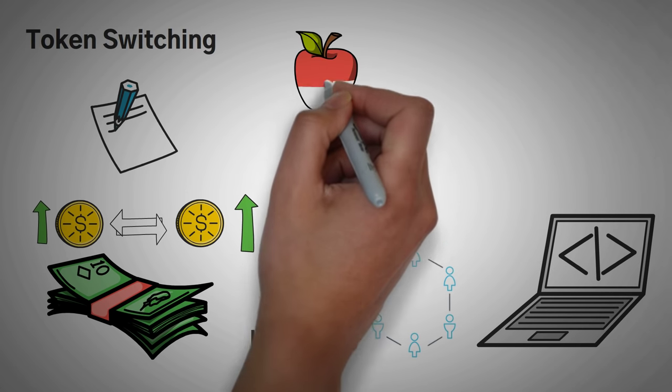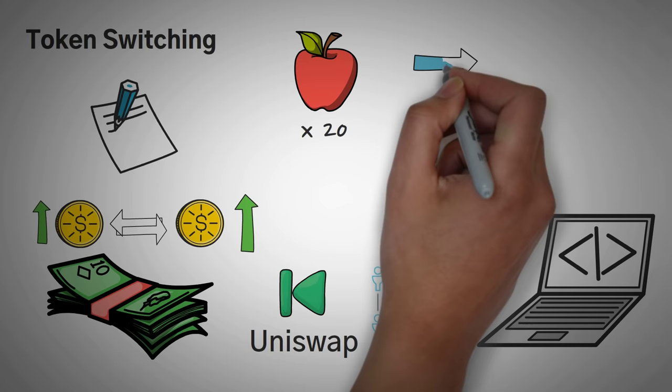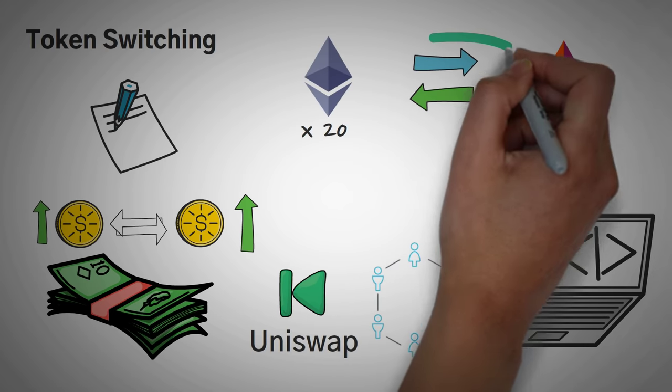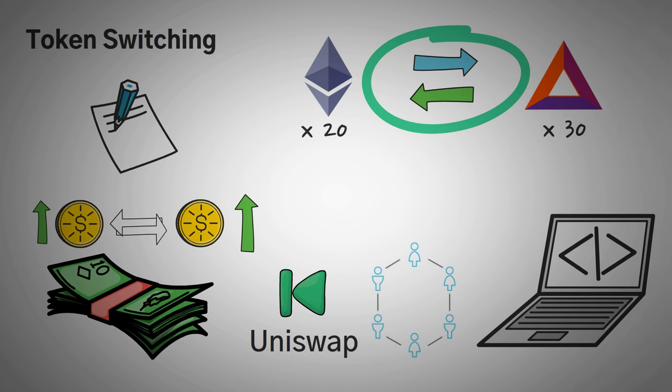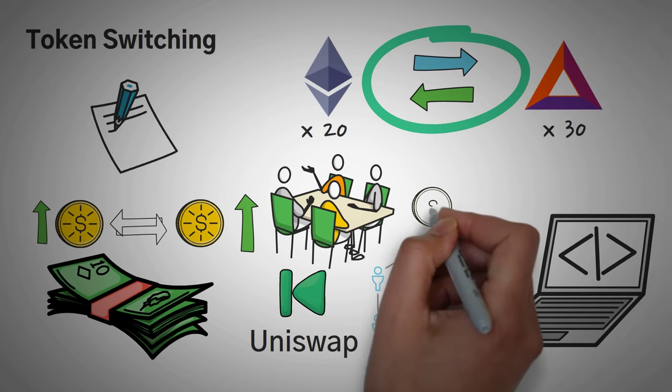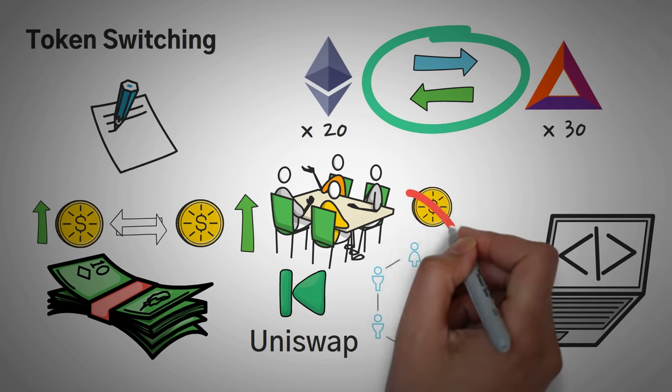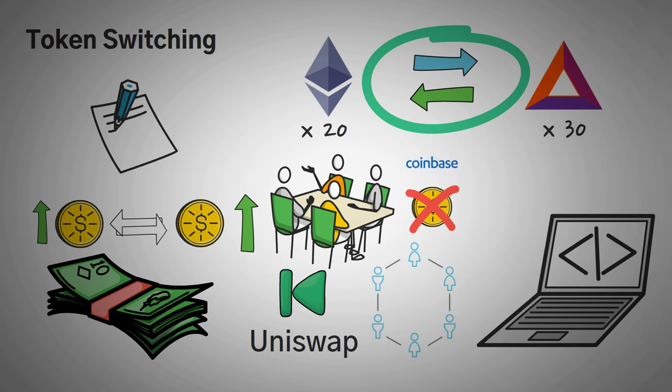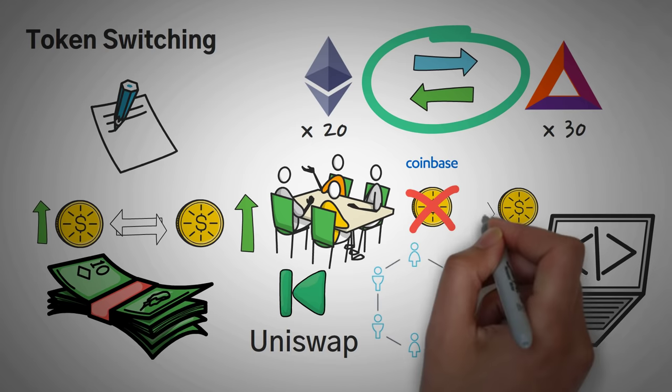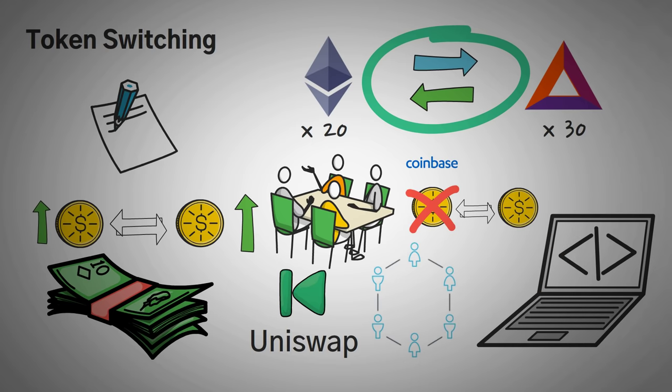You can write a smart contract that says, if you give me 20 apples, I'll give you 30 coconuts. Except the apples and coconuts are Ethereum and basic attention token. So a smart contract can allow you to switch tokens. Token switching opens up a whole new world for day traders or investors that want to get into a specific coin that isn't currently on a major exchange like Coinbase. Instead, they could buy a coin that is available and then use the decentralized exchange to swap those tokens.